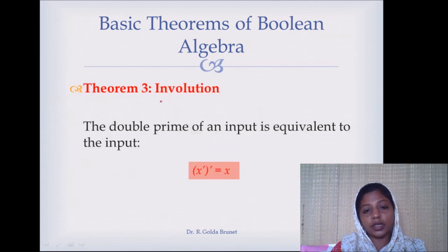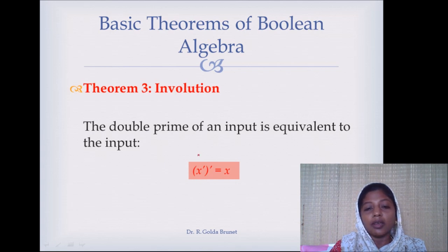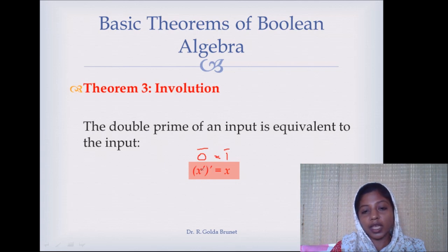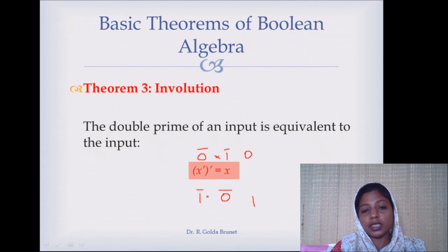The next theorem is involution. x'' (x double complement) is simply x. Why? If x = 0, complementing it gives 1, and complementing 1 again gives 0 — which is the same x we started with. If x = 1, complementing gives 0, and complementing 0 again gives 1 — again the same x. This is involution.